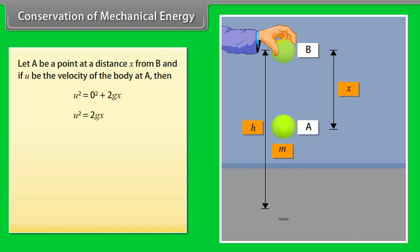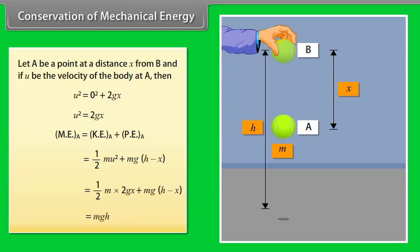Let A be a point at a distance x from B and if u be the velocity of the body at A, then u square is equal to 2gh. Mechanical energy of the body at A is equal to kinetic energy of the body at A plus potential energy of a body at A. By calculating it we get the mechanical energy of the body at A is mgh.